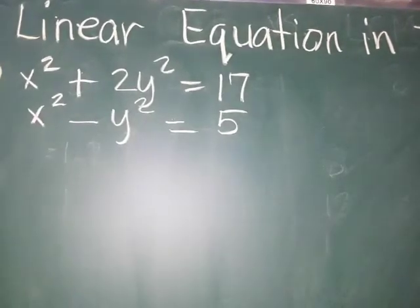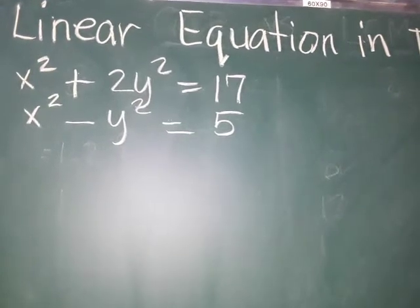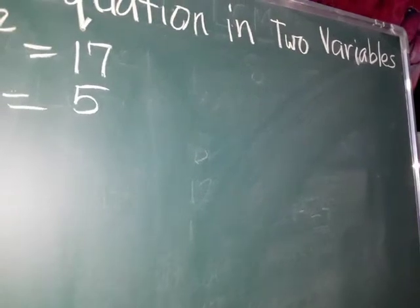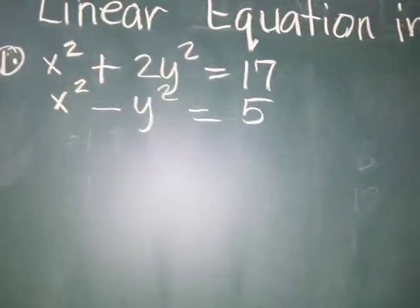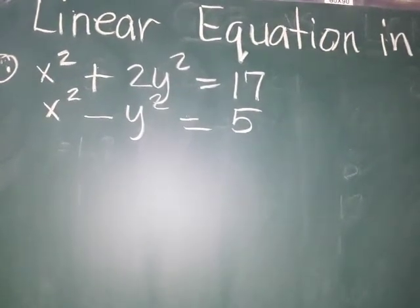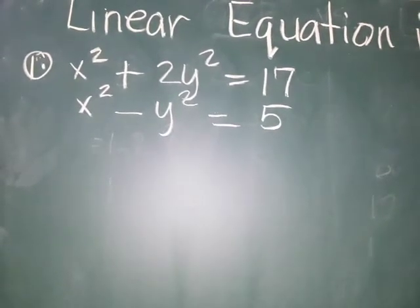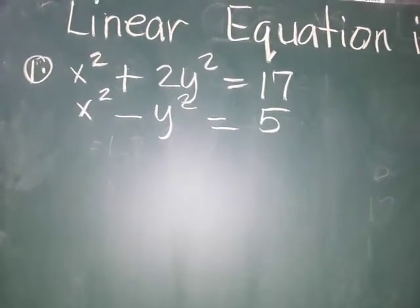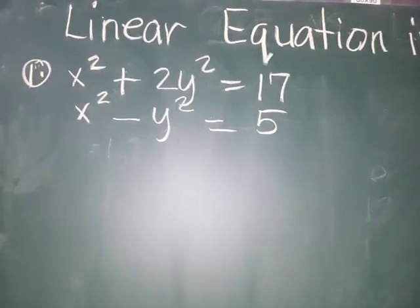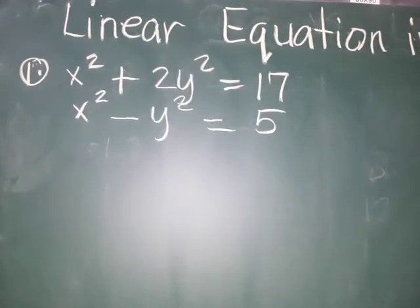Hello everyone! Today we're going to discuss the linear equation in two variables. Someone asked for help so I decided to make this lesson. We have here an example: x squared plus 2y squared is equal to 17, and x squared minus y squared is equal to 5. So how do we get the value of x and the value of y?